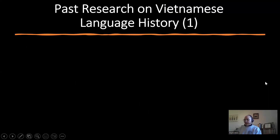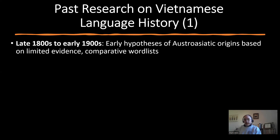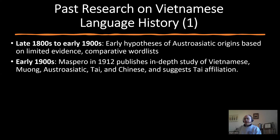Let's start with research on the origins of Vietnamese language history, which goes back over 150 years. In the late 1800s to early 1900s, there were early hypotheses of some kind of Austro-Asiatic origins, based on limited comparative word lists. In 1912, French scholar Maspero published an in-depth study comparing Vietnamese with Muong, Austro-Asiatic, Dai, and Chinese, and suggested Dai — meaning Tai, Lao, Zhuang, and related languages — as the origin.